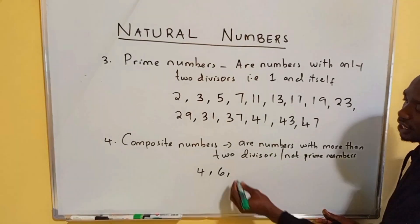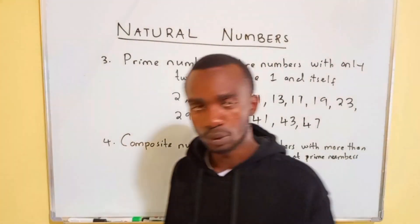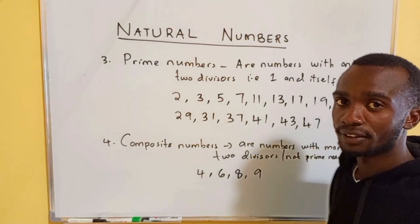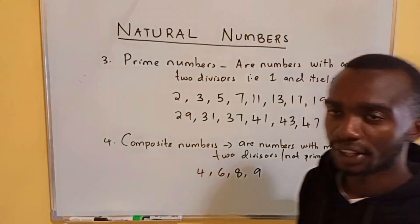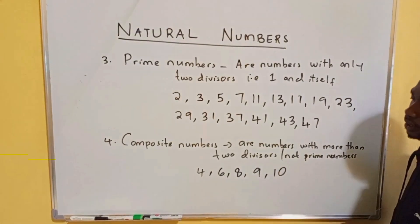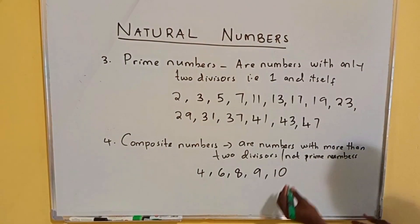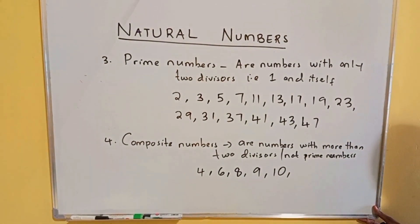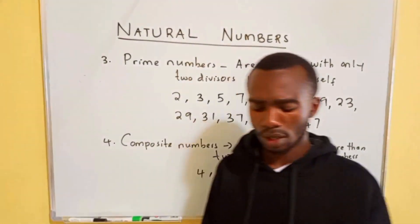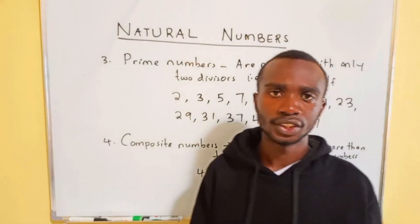Then we have 8, with divisors 1, 2, 4, and 8. Then 9, with divisors 1, 3, and 9. Then 10, with divisors 1, 2, 5, and 10. The next composite number is 12, with divisors 1, 2, 3, 4, 6, and 12.